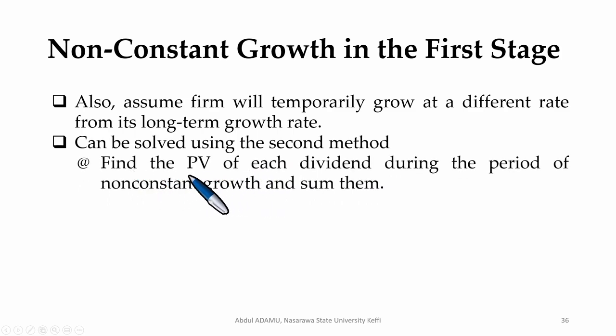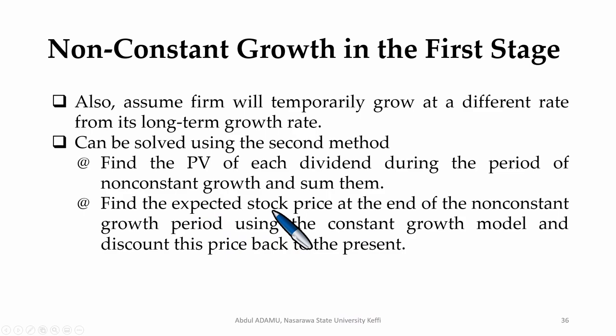The method is: first, for each of those dividends in the non-constant growth stage, in the first stage, find the present value of each dividend during the period of non-constant growth and sum them.